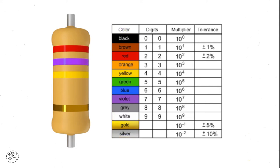In a 4-band resistor, the first two bands represent the digits or significant figures. The third band indicates the multiplier, and the fourth band indicates the tolerance.